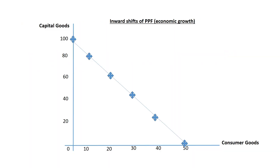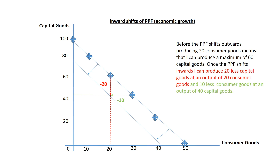Inward shifts of the PPF are really bad because it means that the economy is losing the ability to produce goods and services, which means we're producing fewer goods and services to meet needs and wants. Before the PPF shifts inwards, when I produce 20 consumer goods, I can produce 60 capital goods. After the PPF shifts inwards, when I produce 20 consumer goods, I can only produce 40 capital goods.